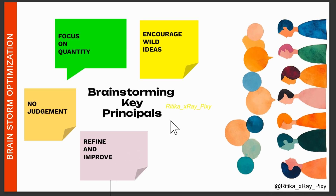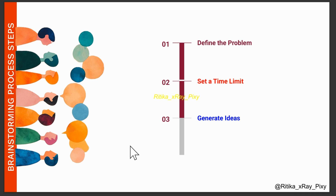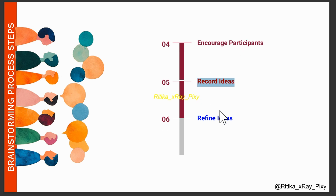Here you can see the key principles of brainstorming: focus on quantity over quality and create wild ideas, there is no judgment or criticism, and we combine ideas and improve them over time. The brainstorming process steps are: first define the problem clearly, set a time limit for discussion, generate ideas freely without any judgment or criticism, encourage participants to share more ideas, and in the end record all ideas, evaluate and refine them.